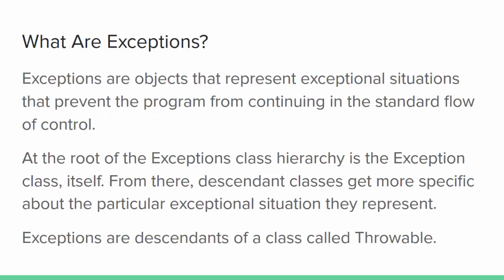Exceptions are objects like any other. They're defined in classes and they have properties and methods. Each exception represents some exceptional situation that's come up in the program that prevents it from continuing in the standard flow of control. All exceptions belong to a hierarchy of classes with the Exception class at the root. What makes them special is that they're all descendants of another class called Throwable, and they can be thrown, which breaks a program out of the standard flow of control and puts it into the exception handling flow.